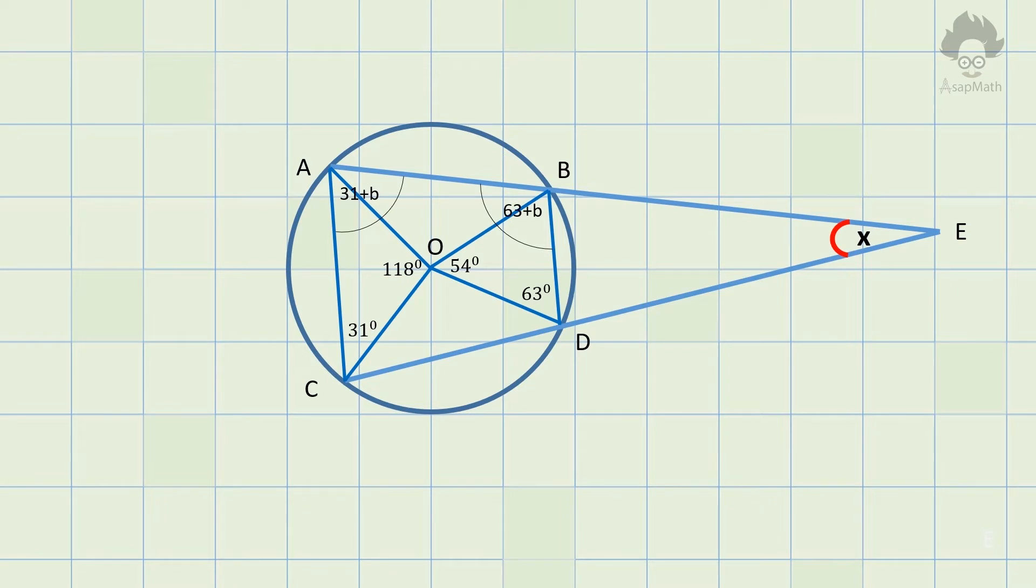Similarly, if we consider COD triangle, it is also an isosceles triangle. Therefore, angle DCO equals angle CDO. Let's consider both angles as A. Now we depict angle C as 31 plus A and angle D as 63 plus A.